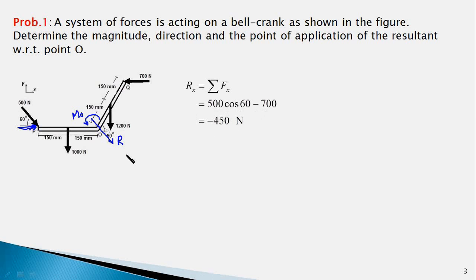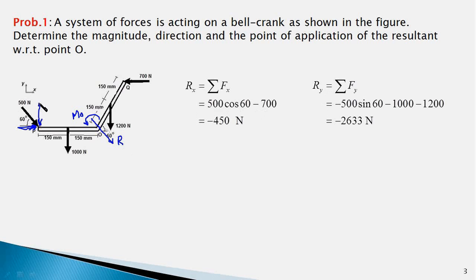Similarly, we will find the y-component of R from the equation Ry = ΣFy. The y-component of the 500 N force would be equal to 500 sin 60, pointing in the minus y-direction. These two additional forces are also pointing in the minus y-direction, so our equation turns out to be: −500 sin 60 − 1000 − 1200, which simplifies to Ry = −2633 N. Now we have computed both the x and y components of the resultant force R.